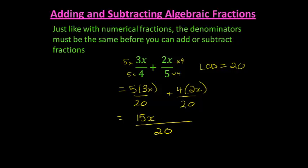And then for my second one, 4 times 2x gives me 8x. 15x plus 8x gives me a total of 23x over 20.